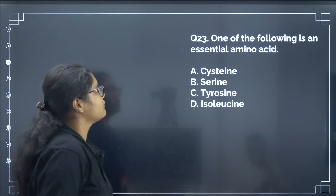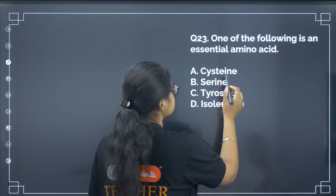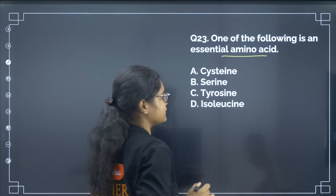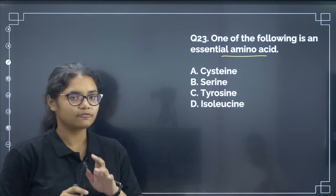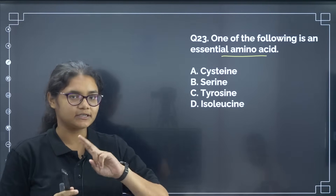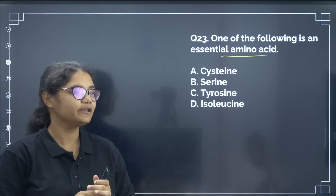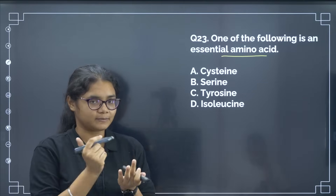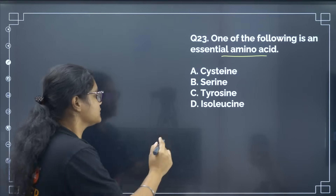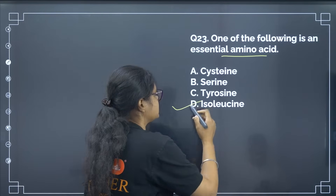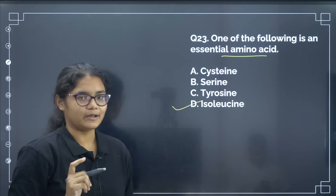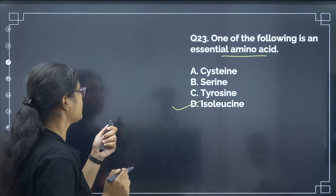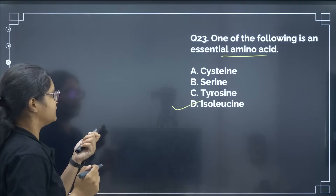Which of the following is an essential amino acid? Amino acids are of two types: essential and non-essential. You must remember examples of essential amino acids especially. Isoleucine is an essential amino acid — correct answer is option number D.